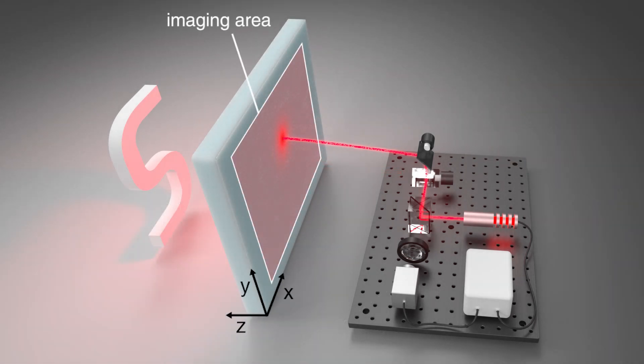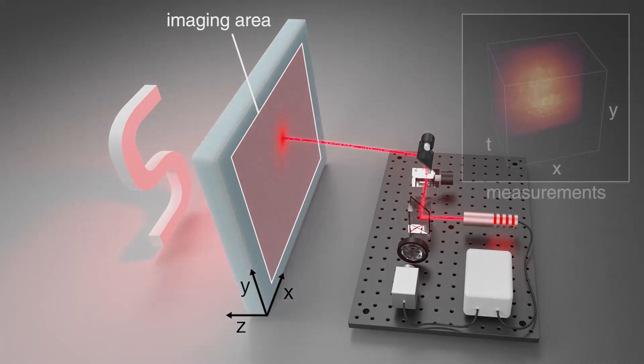This measurement process is repeated for a grid of points on the scattering media, resulting in a 3D spatiotemporal volume.